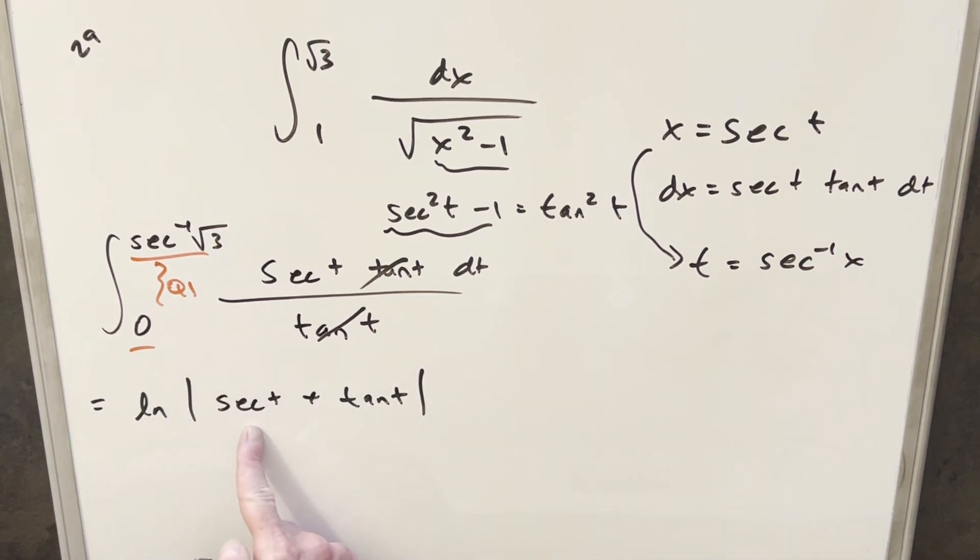But again, because we're in the first quadrant, secant and tangent are always going to be positive, and we'll just drop the absolute value now, and we can just put in parentheses, and we just need to evaluate this from 0 to secant inverse square root of 3.